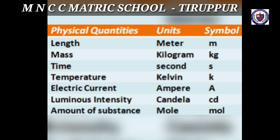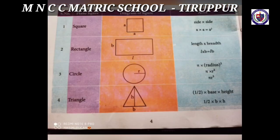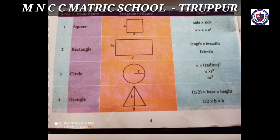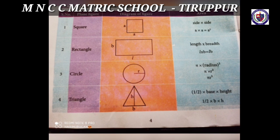Area: the area of a figure is the region covered by the boundary of the figure. Its SI unit is square meter (m²). See tabular column 1.2: area of some regularly shaped figures. The area of a square is calculated using the formula: side × side.